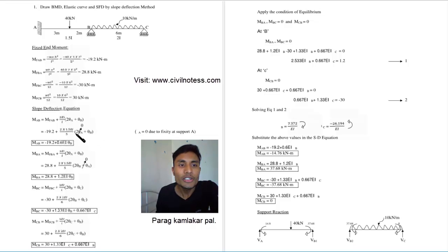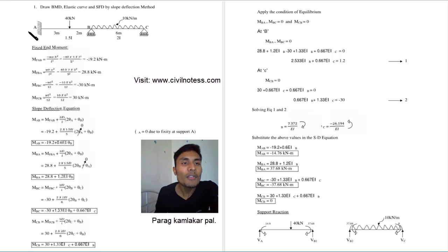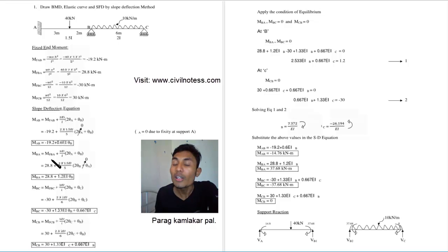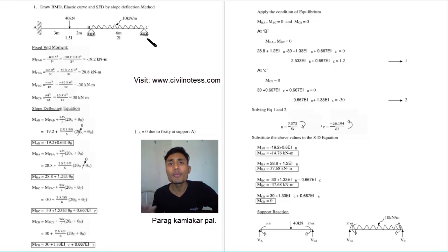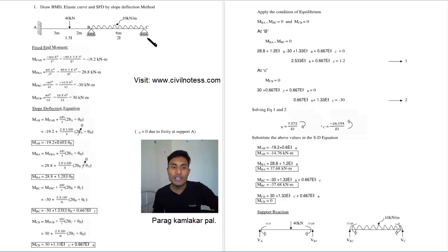For moment BA the equation is: M_BA = FEM_BA + (2EI/L)(2θ_B + θ_A), where θ_A equals zero due to the fixed support. For moment BC: M_BC = FEM_BC + (2EI/L)(2θ_B + θ_C). For moment CB: M_CB = FEM_CB + (2EI/L)(2θ_C + θ_B). We substitute the known values into each equation accordingly.